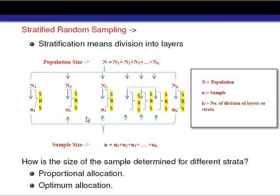Suppose we have a population of size capital N. We will divide the whole population according to some criteria into different parts, and these different parts are called strata.